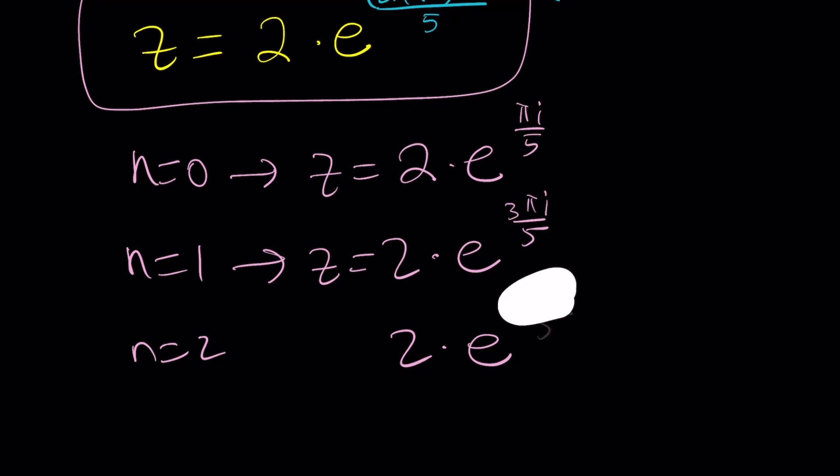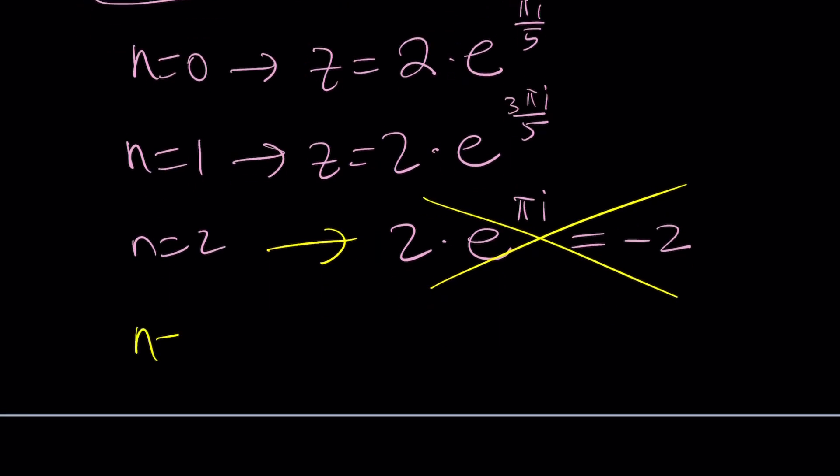Remember, n equals 3 is going to produce 2 times e to the power 7 pi i over 5. And n equals 4 finally is going to give us 2 times e to the power 9 pi i over 5. Once you know the value of pi over 5, the others are going to be relatively easy to find.